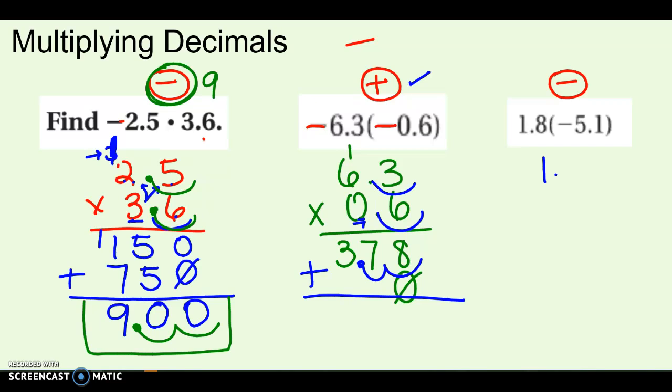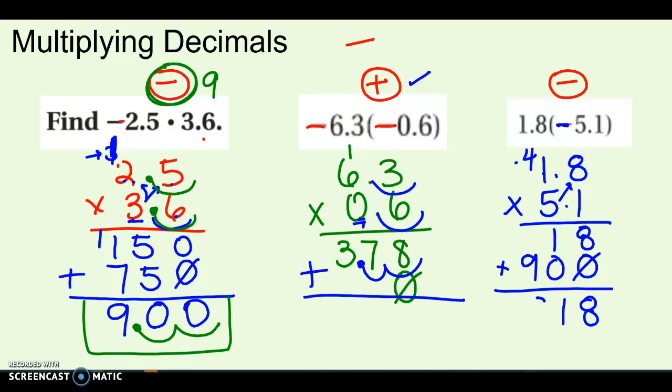Okay, let's try setting up the next one. 1.8 times a negative 5.1. But we already know our answer is going to be negative at the end. That takes care of that part for us. So just do the multiplication. So pause it, try it, and then we'll come back and check together. All right, if you're ready to check, 1 times 8 is 8. 1 times 1 is 1. Placeholder. Now I'm doing 5 times the 8 is 40. Carry the 4. 5 times 1 is 5. 6, 7, 8, 9. I've got to add those 4 on. So I get this. Add them up. And I had 1, 2 places to move over. So 9.18. And we said the answer was going to be a negative.